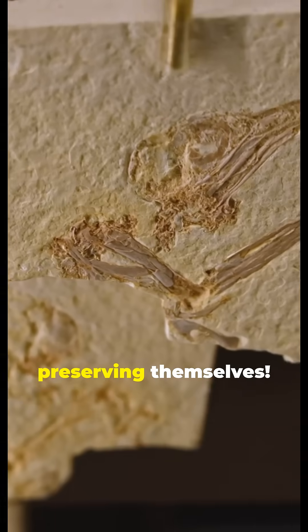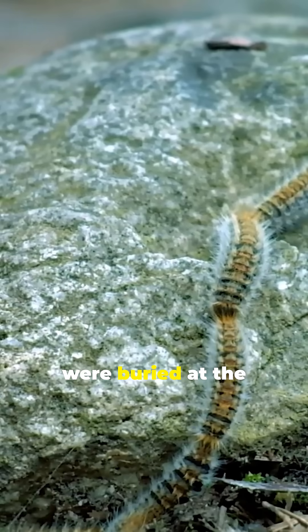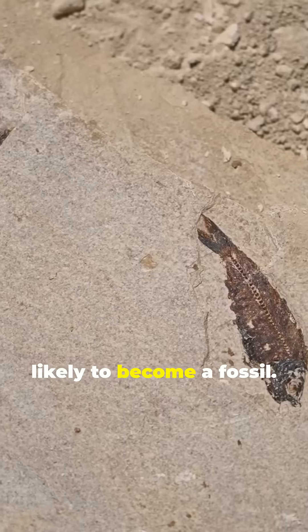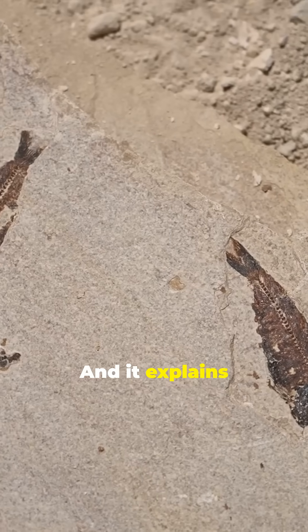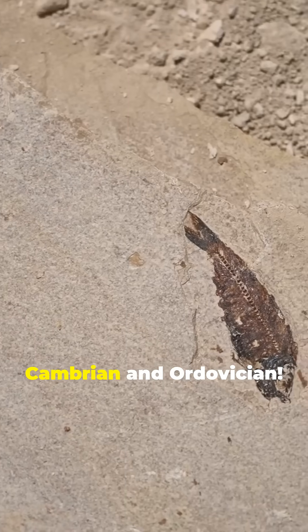Essentially, they're better at preserving themselves. This means that if a shrimp and a worm were buried at the same time, the shrimp is more likely to become a fossil. And it explains why we find more fossils of big arthropods from periods like the Cambrian and Ordovician.